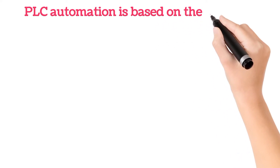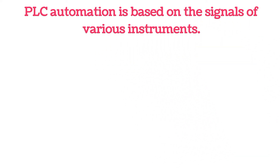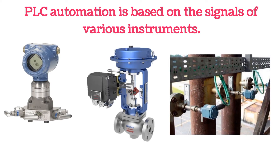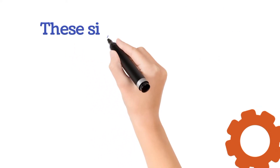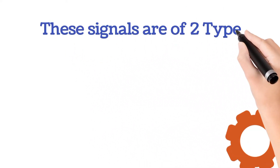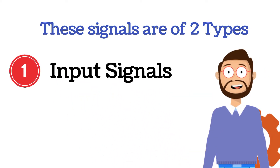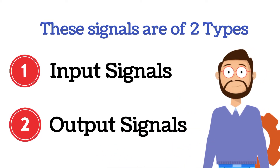PLC automation is based on the signals of various instruments. You must have seen RTDs, thermocouples, control valves, sensors, and transmitters installed in the field. PLC automation is based on the signals of these instruments. These signals are of two types: the first is input signals and the second is output signals.